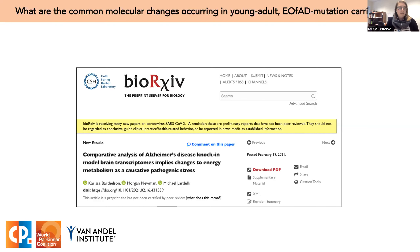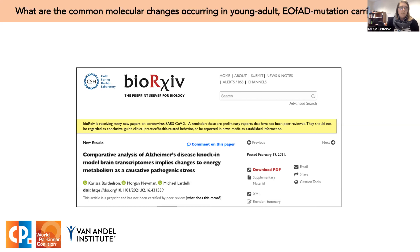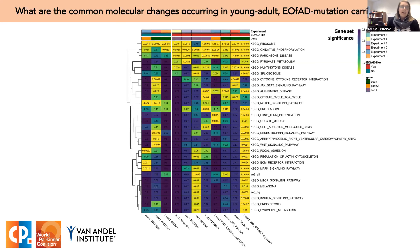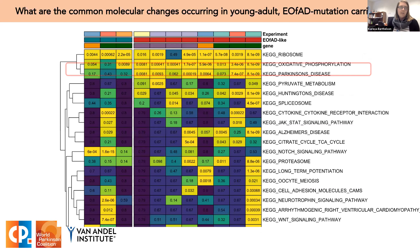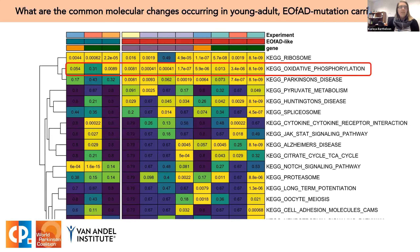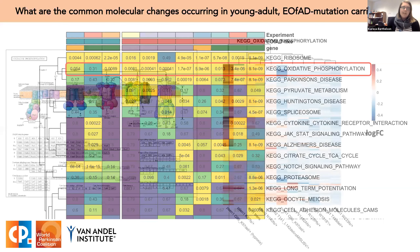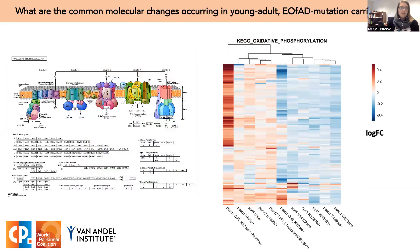This heat map summarizes the KEGG gene sets significantly altered in at least two of our 11 zebrafish mutants across six RNA-seq experiments. The only gene set appearing to be altered specifically by Alzheimer's-related mutations is oxidative phosphorylation, suggesting that changes to mitochondrial function are a signature of pre-symptomatic Alzheimer's disease. However, I don't see a consistent direction of change in the EOFAD mutants, as shown by this heat map of log fold changes of oxidative phosphorylation pathway genes across our zebrafish mutants.